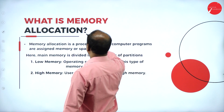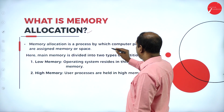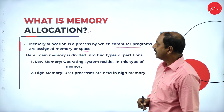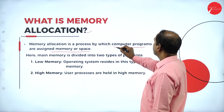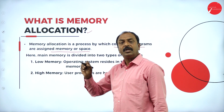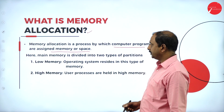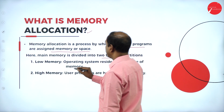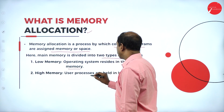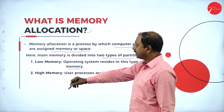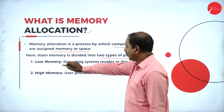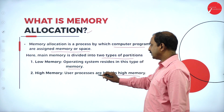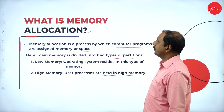What is memory allocation? Memory allocation is a process by which computer programs are assigned memory or space. There are two types of partitions: low memory, where the operating system resides, and high memory, where user processes are held. The operating system is loaded in low memory and all other user programs or processes are stored in high memory.